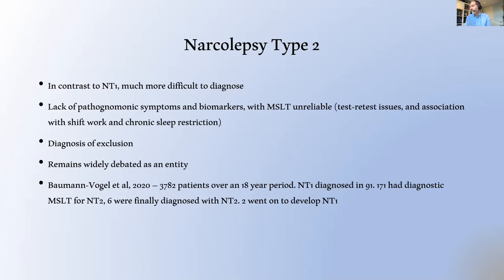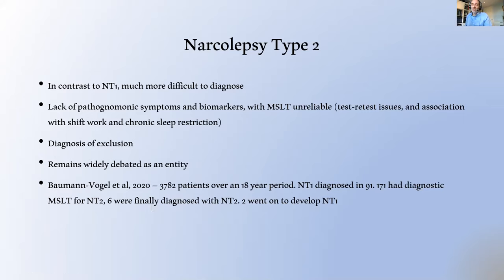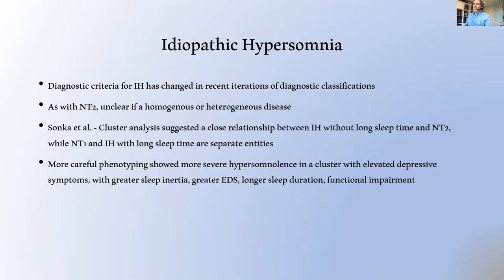This is suggested by a recent study from a Swiss group which looked at almost 4,000 patients passing through their center over 18 years, all of whom had assessments and MSLTs. They formally diagnosed NT1 in 91 patients. An additional 171 had an MSLT that was initially diagnosed as NT2, but by the end of all diagnostic testing and clinical assessments, only six of those 171 were finally diagnosed with NT2 — and two of those then went on to develop NT1. So essentially over 18 years they had 93 NT1s and just four NT2s, suggesting that NT2 is significantly rarer than NT1.